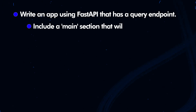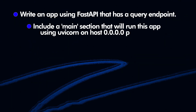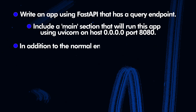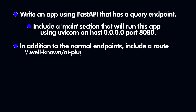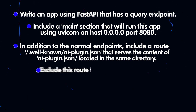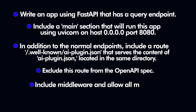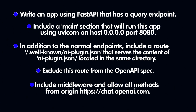Include a main section that will run this app using UVcorn on host 0.0.0.0 port 8080. Next, instruct ChatGPT to include additional endpoints from the OpenAI documentation by saying: include a route for .well-known/ai-plugin.json that serves the content of ai-plugin.json located in the same directory. Exclude this route from the OpenAI API spec. Add middleware by saying: include middleware and allow all methods from chat.openai.com.